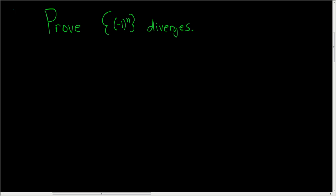Prove that the sequence (-1)^n diverges. So intuitively, if you look at this sequence, the first term is negative 1. Because when you plug in 1, you get (-1)^1, which is negative 1.